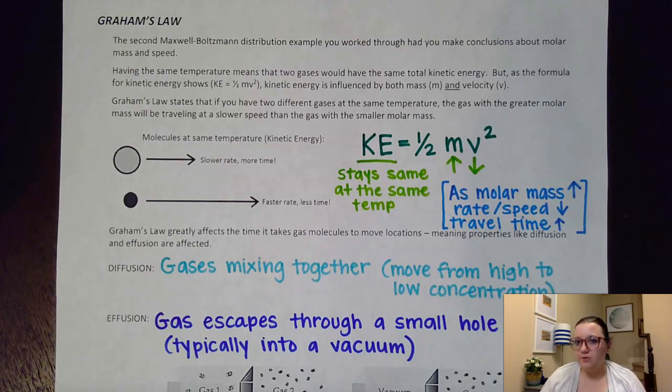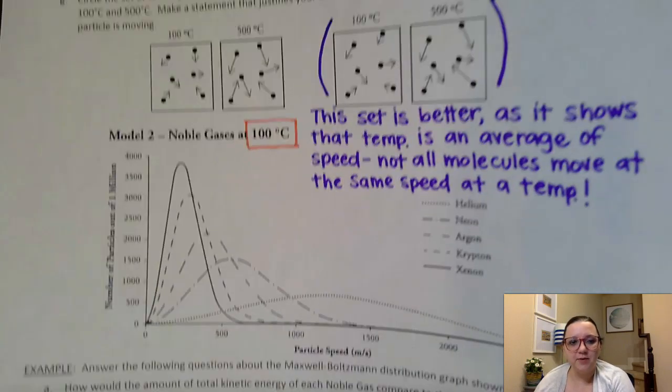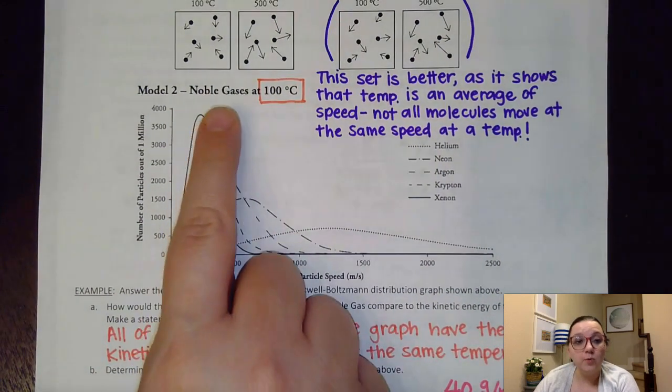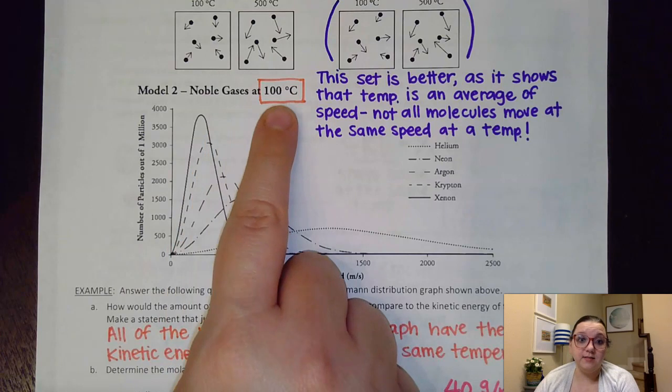Now you got a little preview to this in our last video about Maxwell Boltzmann distribution curves, specifically the last curve that we looked at. So I'm actually going to put that picture back up here for just a moment. On this image we had noble gases that were all at the same temperature conditions at 100 degrees Celsius.